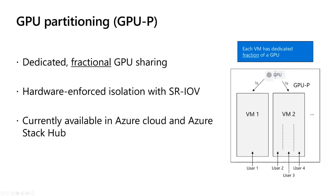The next type is GPU Partitioning — GPU-P. You're fractioning your GPU to increase your density on the host. You break your GPU into smaller parts and be able to assign them to a VM, using SR-IOV as the isolation mechanism. This is currently available in Azure and Azure Stack Hub. As you can see, depending on what you decide to assign to the VM, you assign a fraction or more than a fraction to a VM and multiple users can log in.